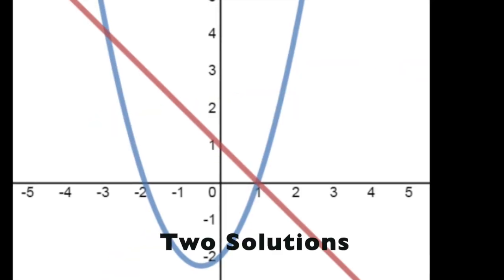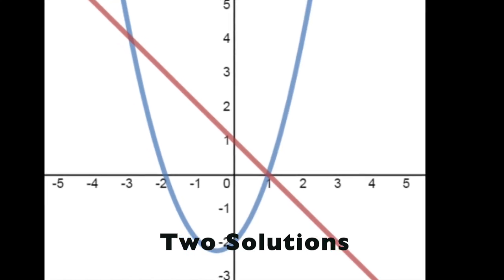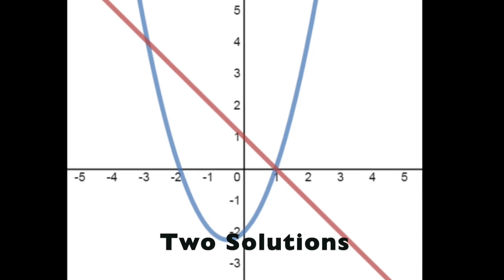But what if it overlapped twice? If it has two intersections, that just means that you have two solutions. So it's nothing crazy. You just have two intersection points, you have two solutions.